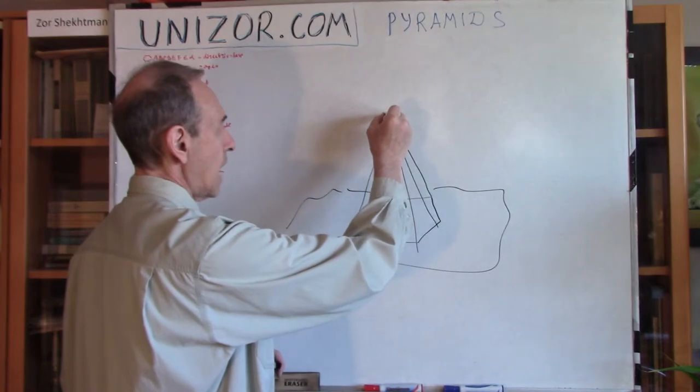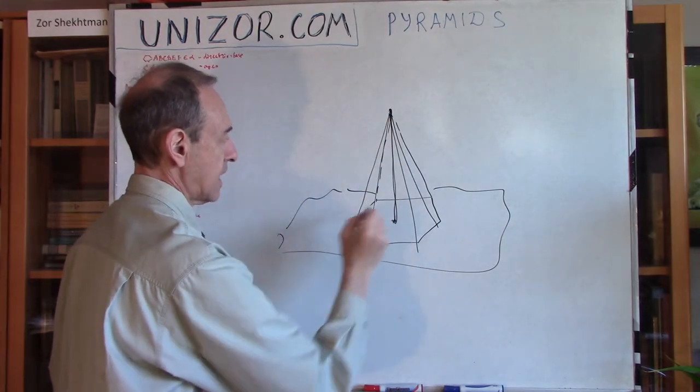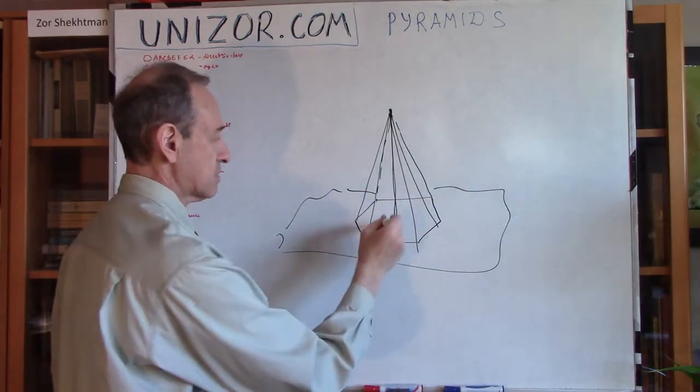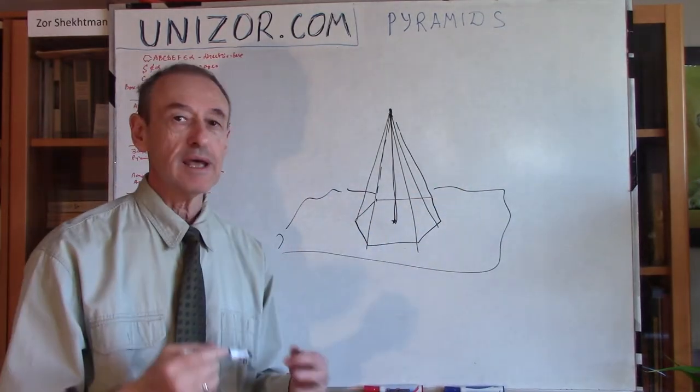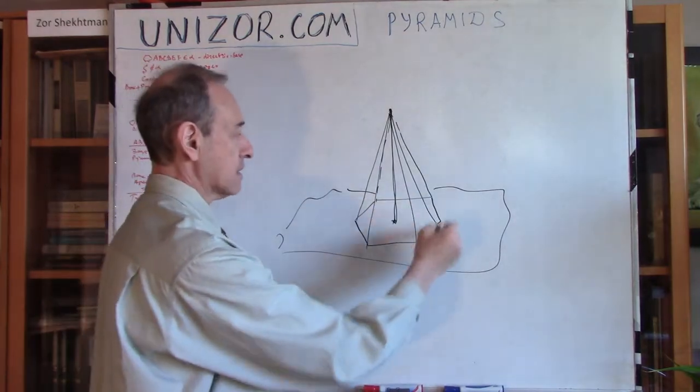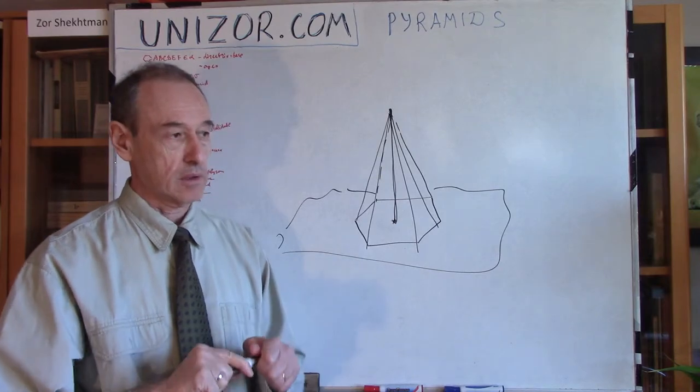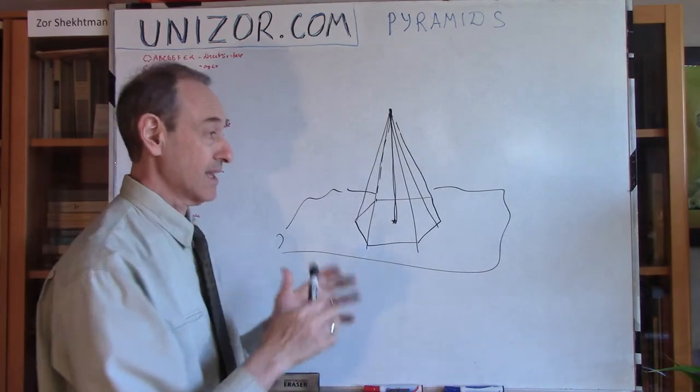And this is the center of this regular polygon. And the apex projects down using the perpendicular to the plane, the base plane. If it projects exactly in the center, it's kind of a regular pyramid with n sides. Sometimes it's called n pyramid.